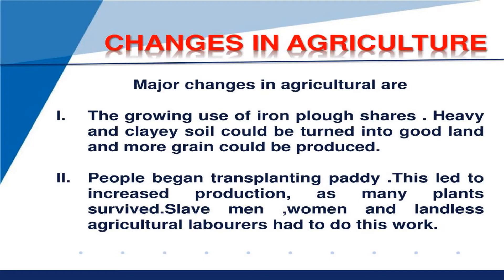Point number one change: we have seen the growing use of iron ploughshares. Heavy and clayey soil could be turned into good land and more grain could be produced. Before that they were using wooden ploughshares, which were not so effective, so iron ploughshares increased the production.